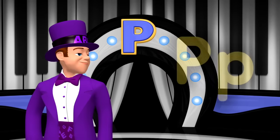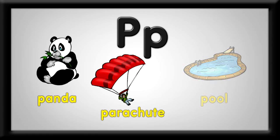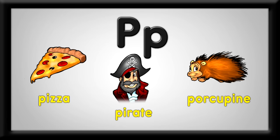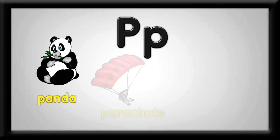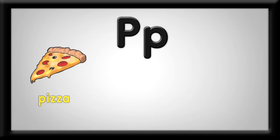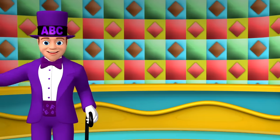Perfect! See the capital P and the lowercase p? Panda, parachute, and pool. These P words are really cool. Pizza, pirate, and porcupine. Sing P words, you're doing fine. Panda, parachute, and pool. Pizza, pirate, and porcupine. Sing P words, you're doing fine. Quite good!